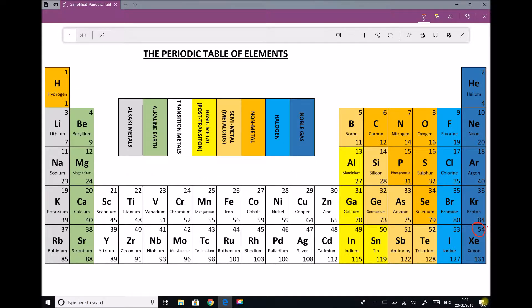So on our simplified periodic table, we have two rows of transition metals. We have the row from scandium through to zinc, and we have the row directly below. And in this video, we're going to look at the electronic configurations for the elements from scandium through to zinc.